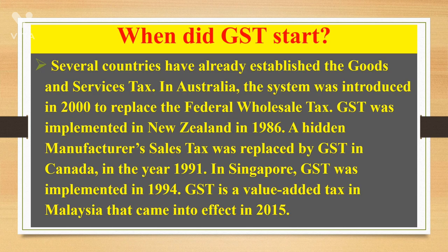When did GST start? Several countries have already established the goods and services tax. In Australia, the system was introduced in the year 2000 to replace the petrol wholesale tax. GST was implemented in New Zealand in 1986. A hidden manufacture tax was replaced by GST in Canada in the year 1991. In Singapore, GST was implemented in 1994.